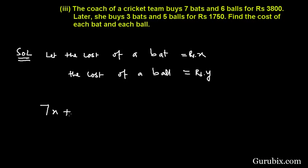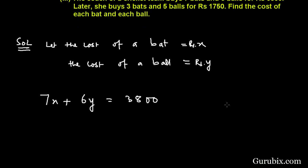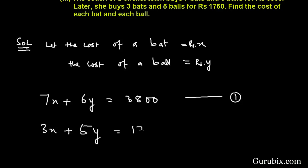So seven X plus six Y equals 3800 — this is equation number one. In condition two, it is given that three bats and five balls, so three X plus five Y equals 1750 — this is equation number two.